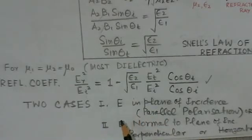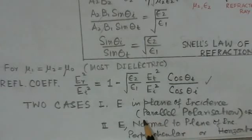Now this involves two cases of oblique incidence. One case is where E is in the plane of incidence, we call it parallel polarization. And the second case is where E is normal to the plane of incidence, we call it perpendicular polarization.